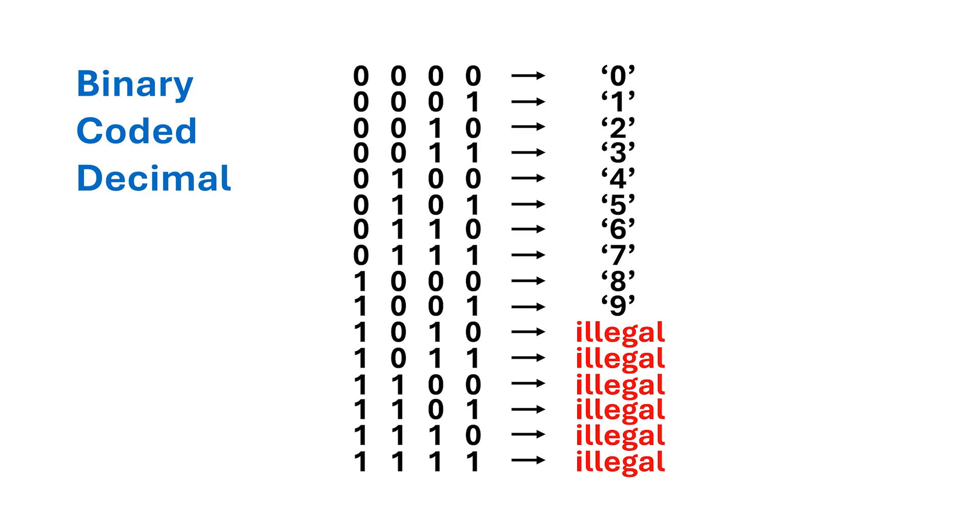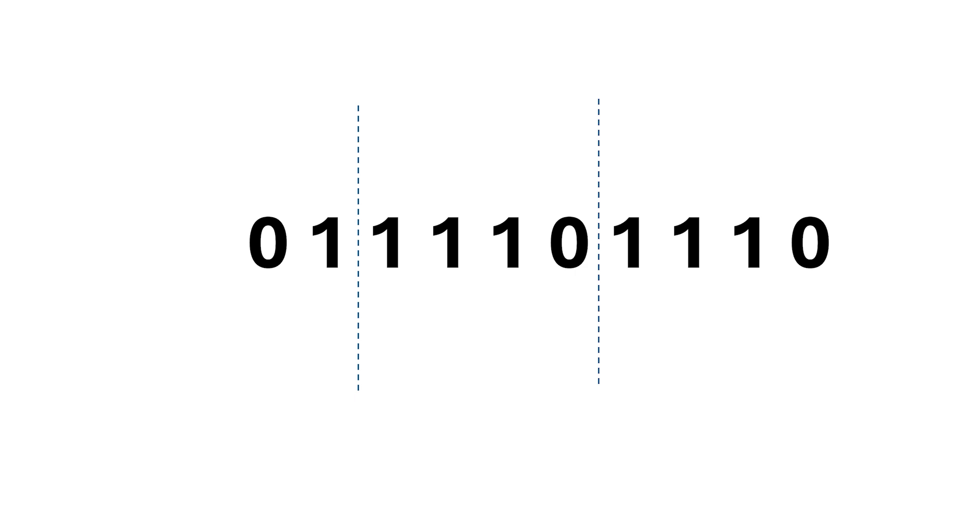If even one of the 4-bit patterns representing a digit has an illegal pattern, then the whole number is illegal. From our previous example of 01, 1110, 1110, well, this is an illegal number in BCD.